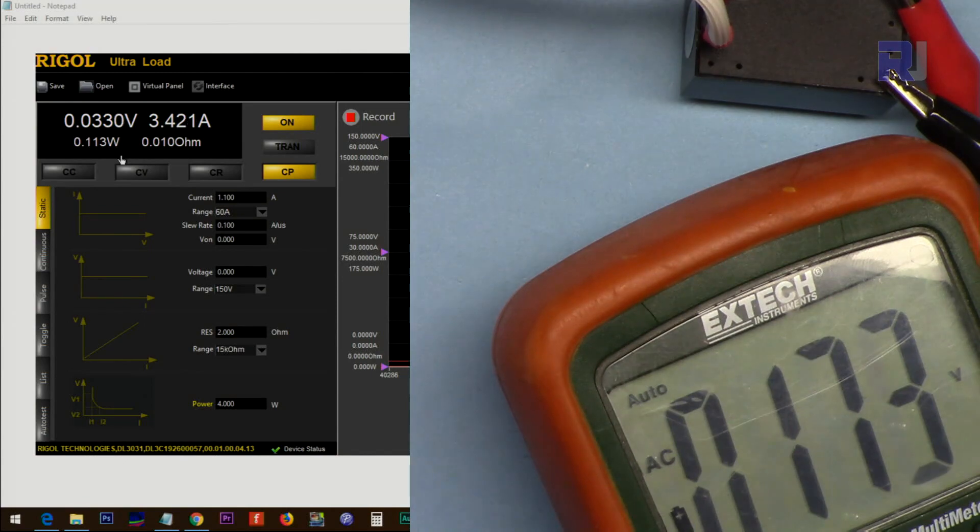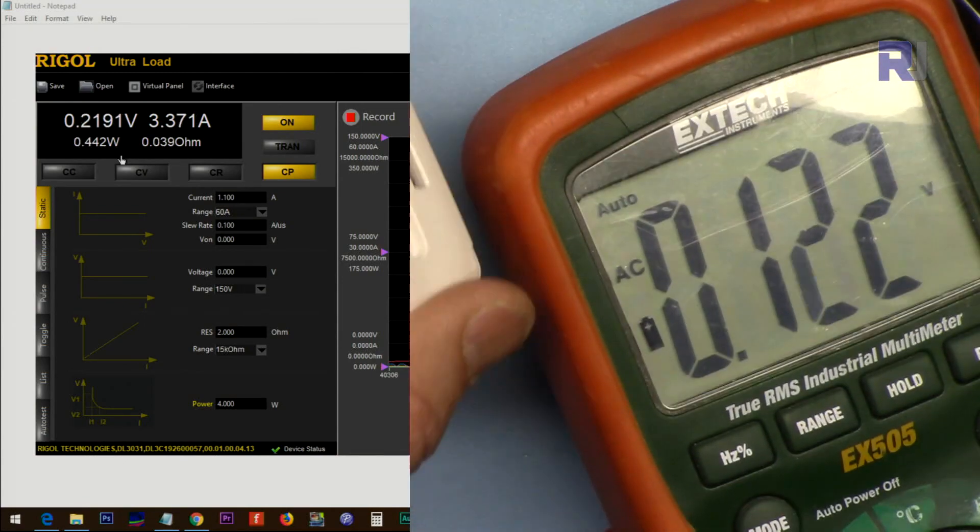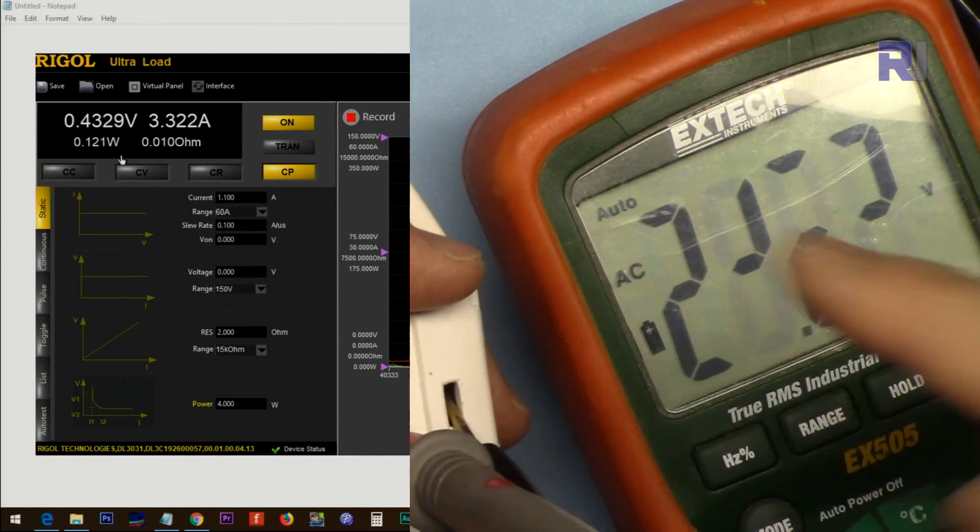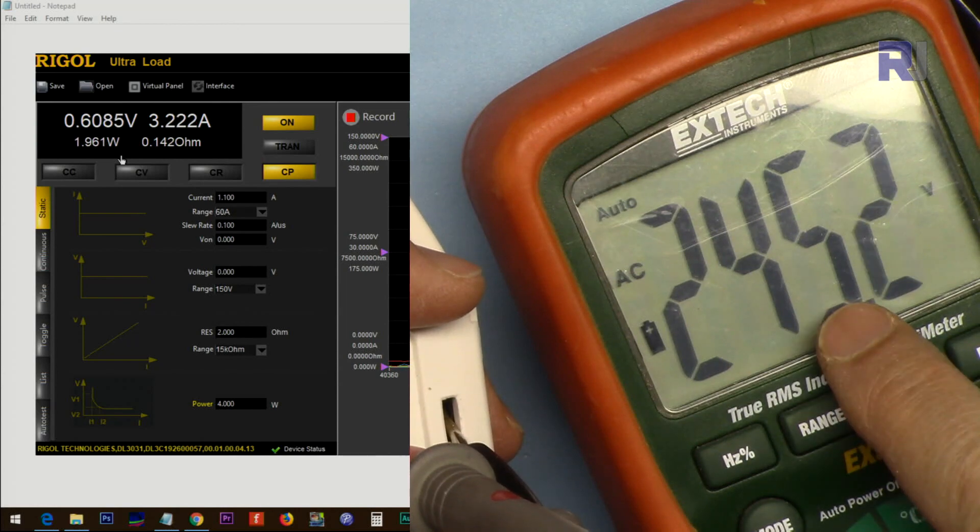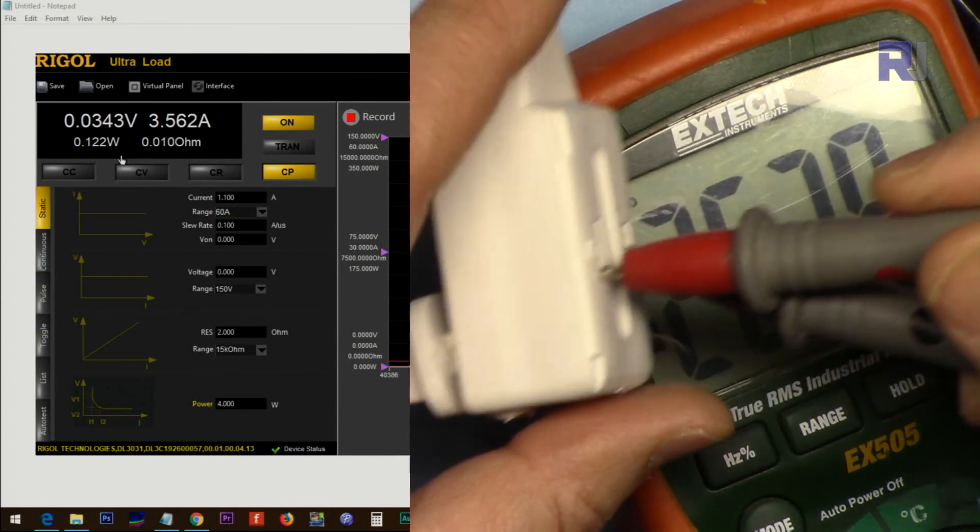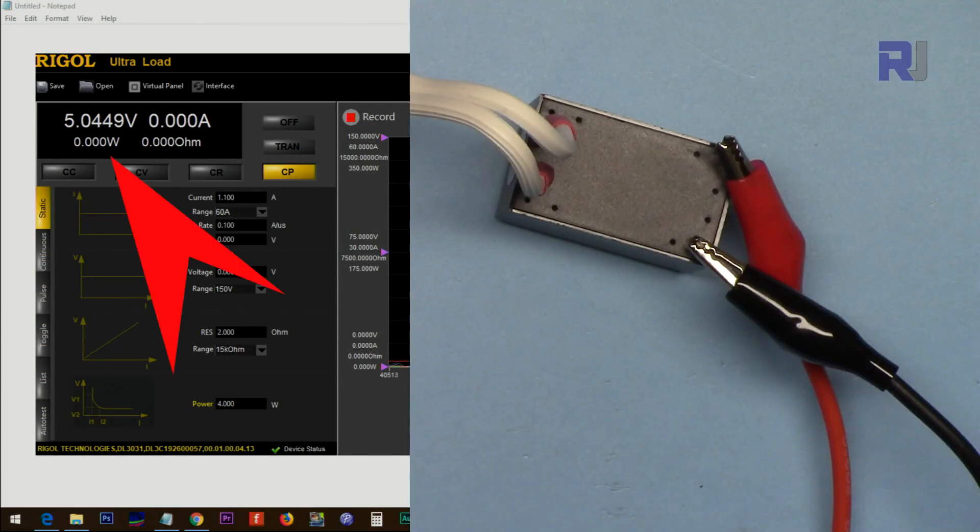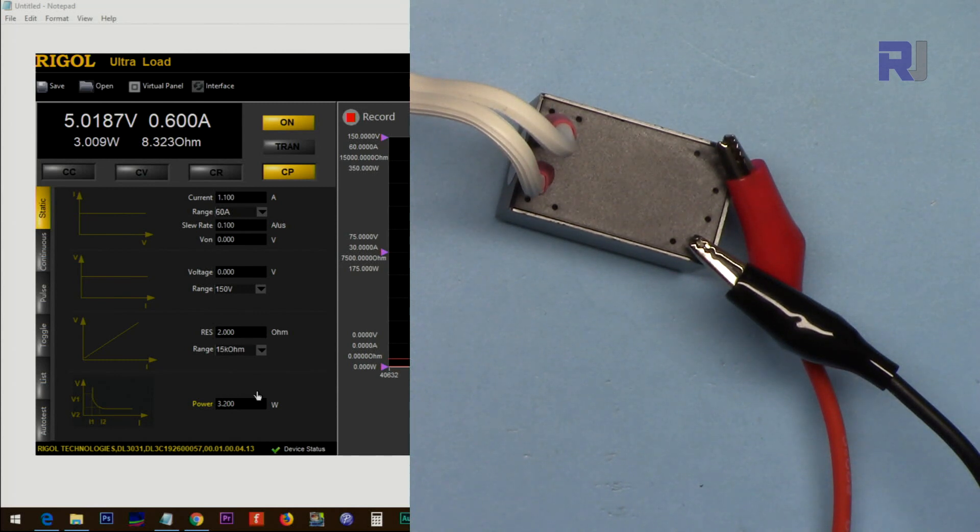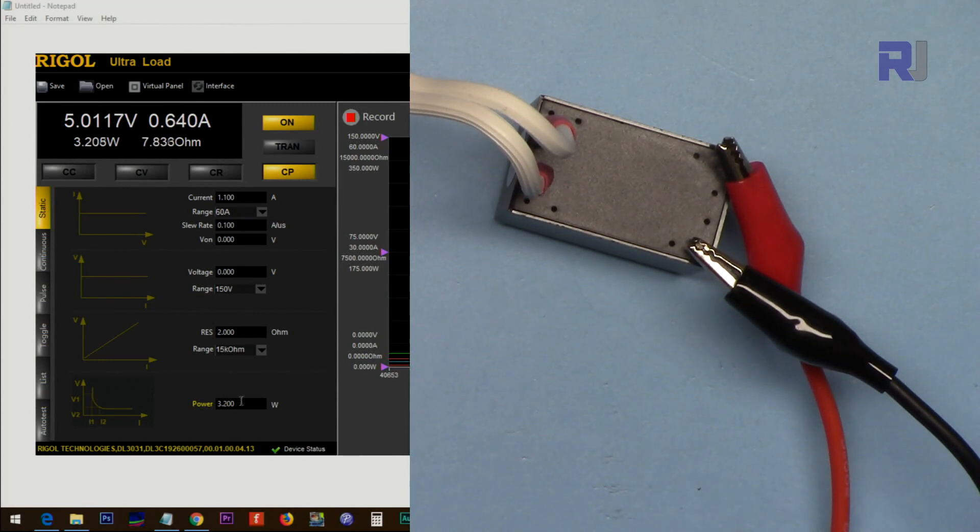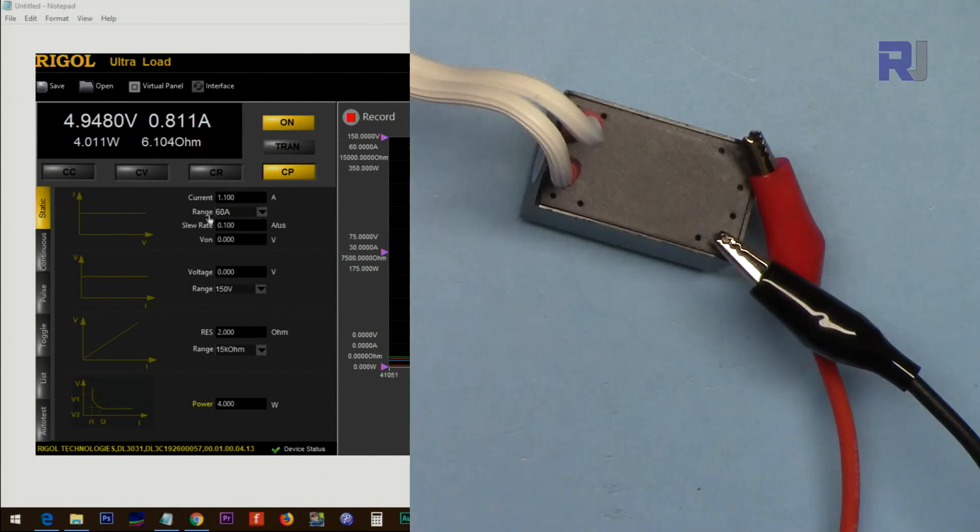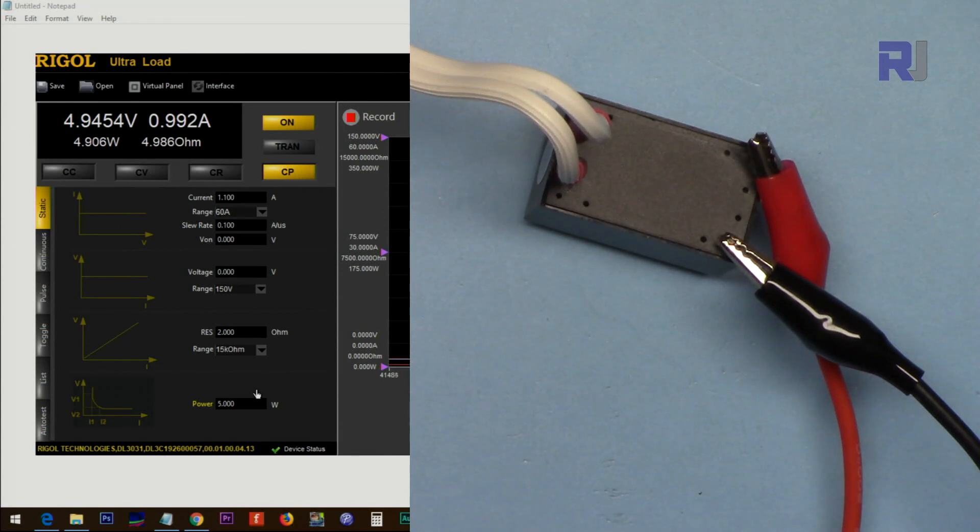Now I've changed the input voltage of this 5 volts module to 240 volts. 245 volts AC connected in here, now we have 5 volts at the output. Let's go for 3 watts, 5 volts, 0.6 amp. Let's go 3.2 watts and I'm gonna go 3.4.